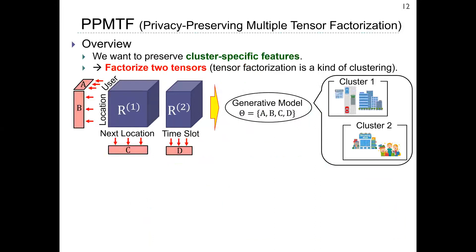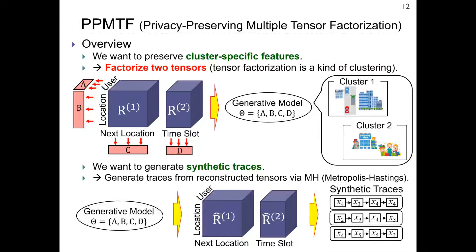To preserve cluster-specific features, we factorize two tensors simultaneously. This is known as multiple-tensor factorization. A generative model then preserves information about clusters such as those who commute by car and those who go shopping. Finally, to generate synthetic traces, we reconstruct tensors from the generative model and generate traces from the reconstructed tensors via the MH algorithm. This is the high-level overview.